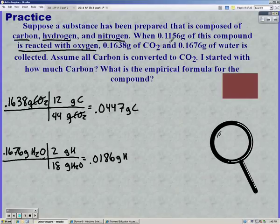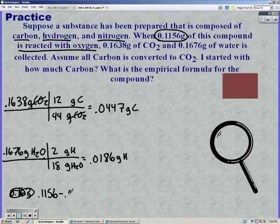If you have a third element, they've got to give you the mass of the entire compound, which was 0.1156. So when you subtract our carbon and hydrogen from our original compound, which was 0.1156, that will give us our mass of the third element, in this case nitrogen.